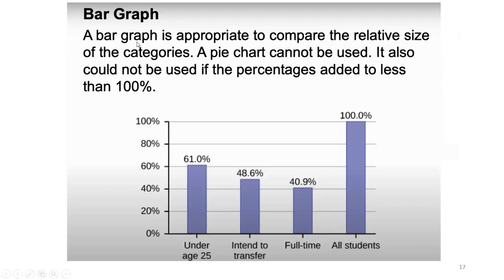Now, what is a bar graph and what is the difference between a bar graph and pie chart? A bar graph is appropriate to compare the relative sizes of categories. A pie chart cannot be used — and also could not be used — if the percentages add to less than 100. If your percentage is less than 100 or greater than 100, it is better to use the bar graph.